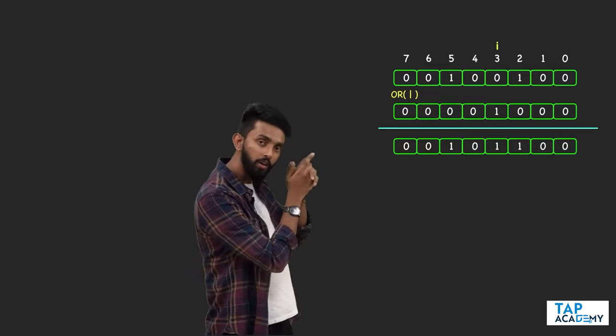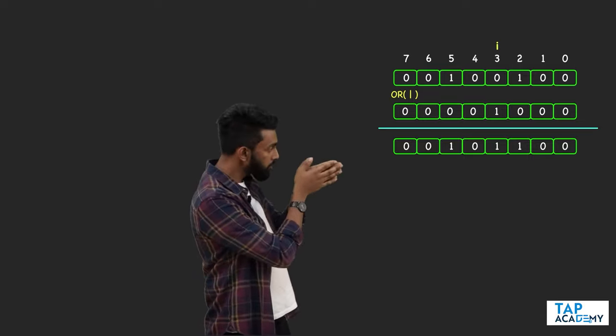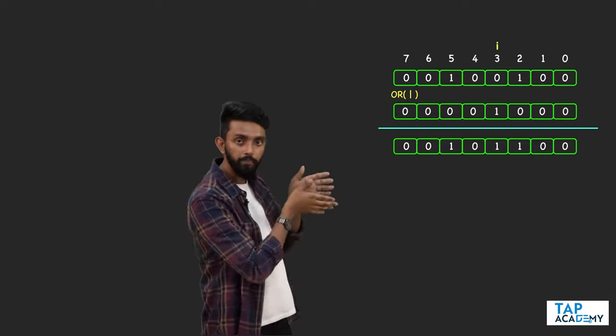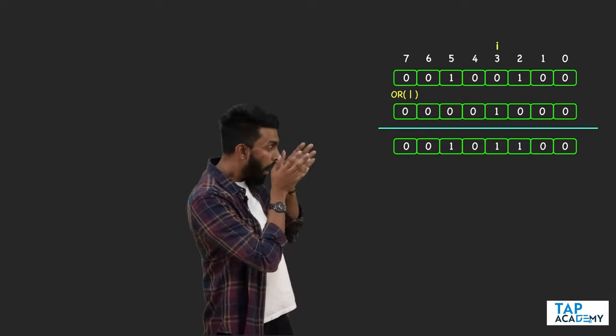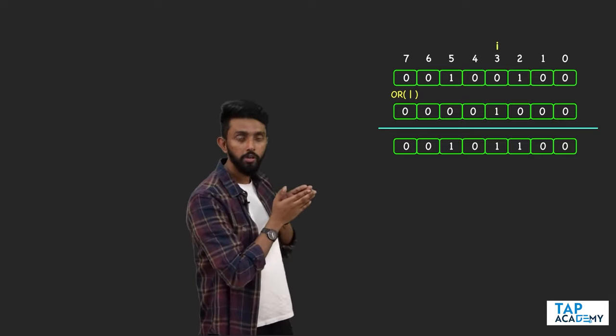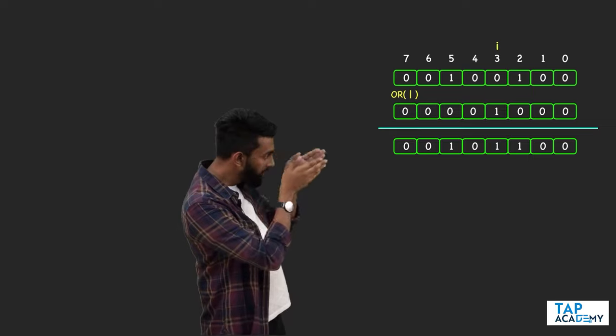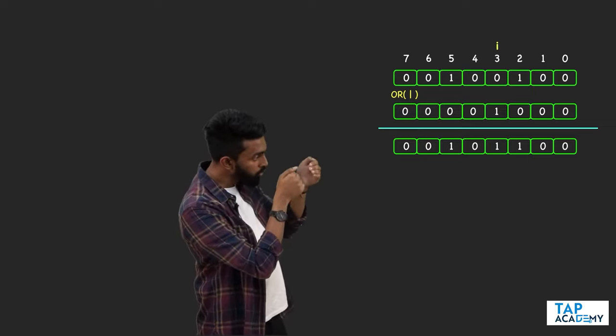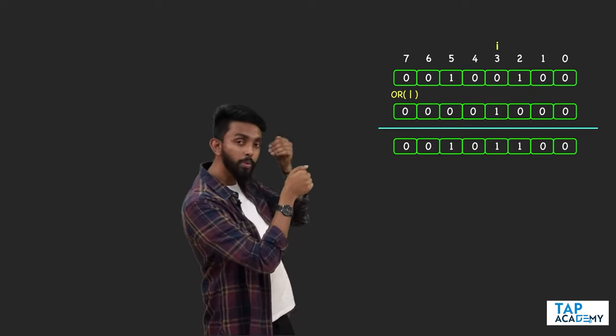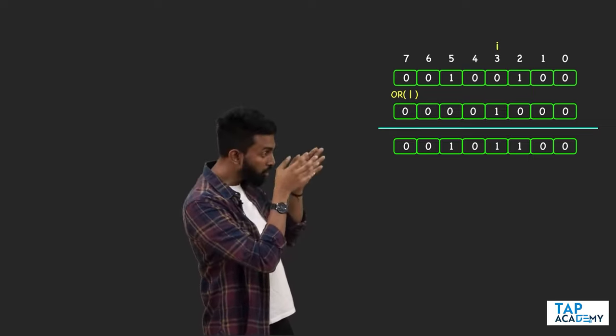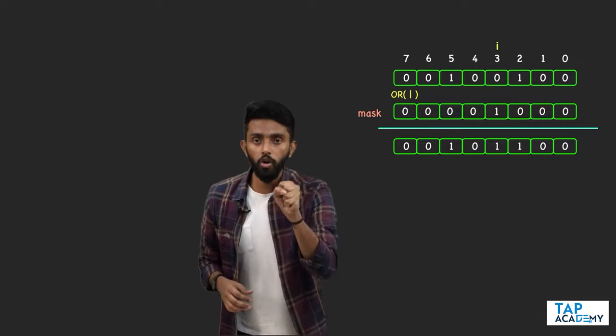Now the question is: this binary number — 00001000 — that I used to perform the OR operation, how do we create it? This binary number used to switch on the ith bit is called your mask. Creation of a mask is a very important concept you must grasp if bit manipulation must become clear to you.